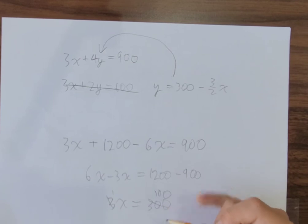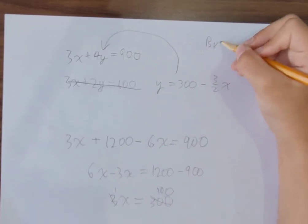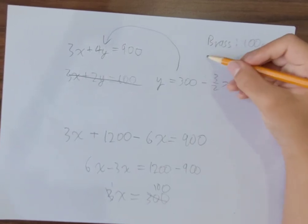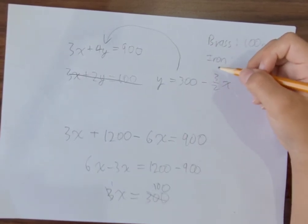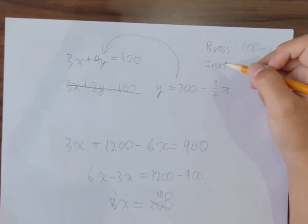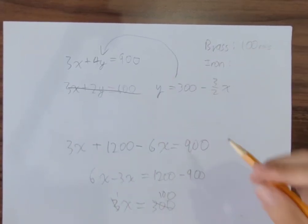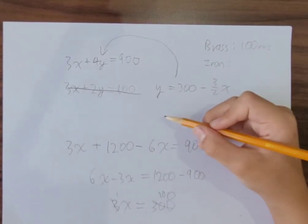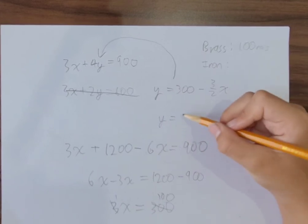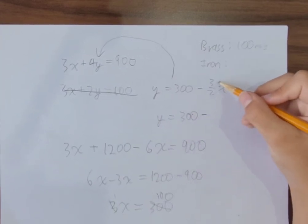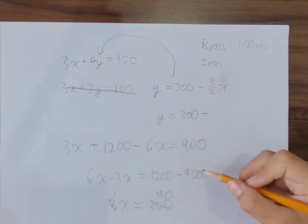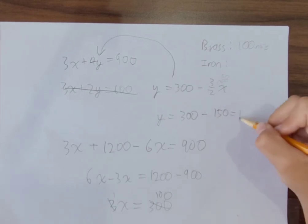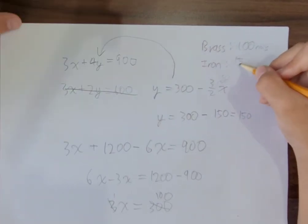That's 100 nails. So now we know how many brass there are: 100 nails. And the iron would be, let's put that into this equation. Y is equal to 300 minus 150, which is equal to 150. So 150 iron nails.